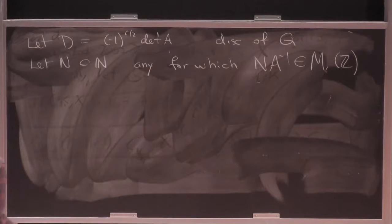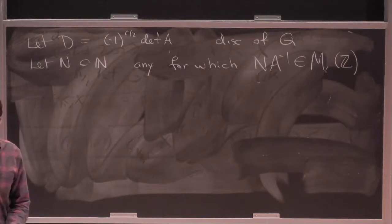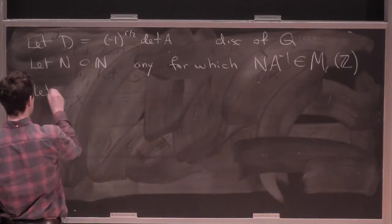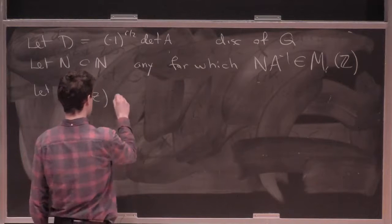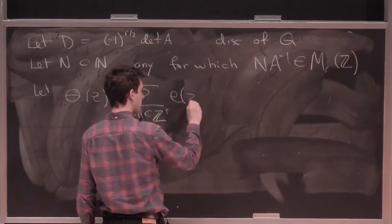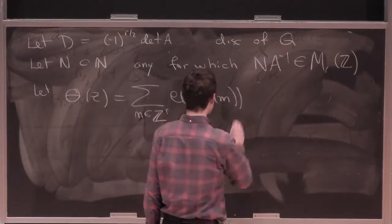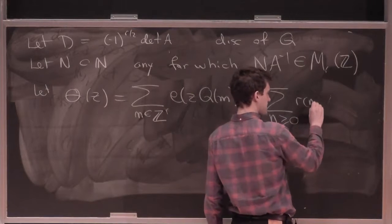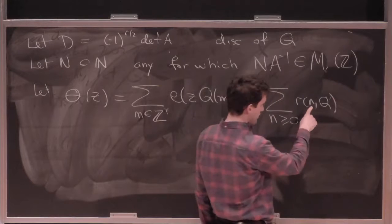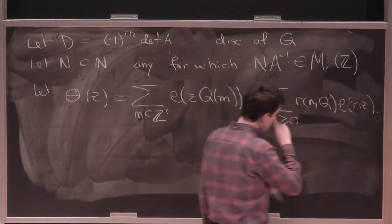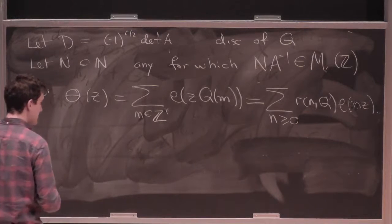The whole theme of the talk is the very interesting relationship between modular forms and these Kloosterman sums. The circle method is a nice way of seeing how that comes out in practice. Let theta be the theta function associated to Q: it's the sum over M in Z^R of e(z·Q(M)). Its Fourier series gives exactly the representation numbers R(N,Q) — the number of representations of N by the form Q.